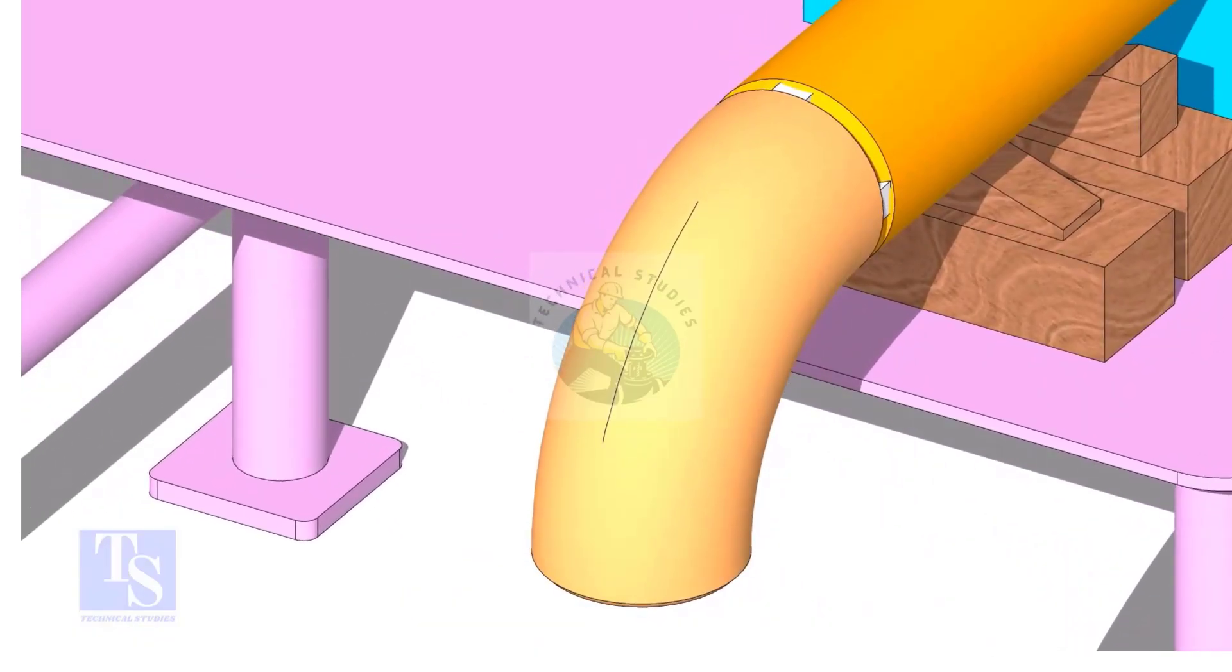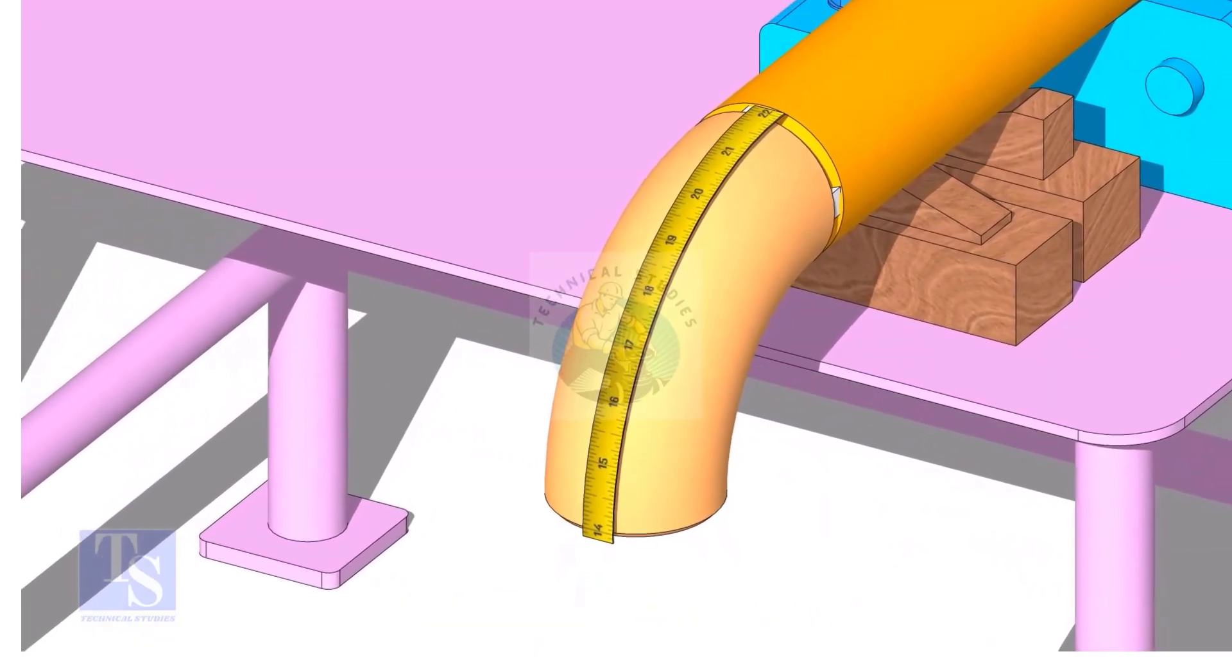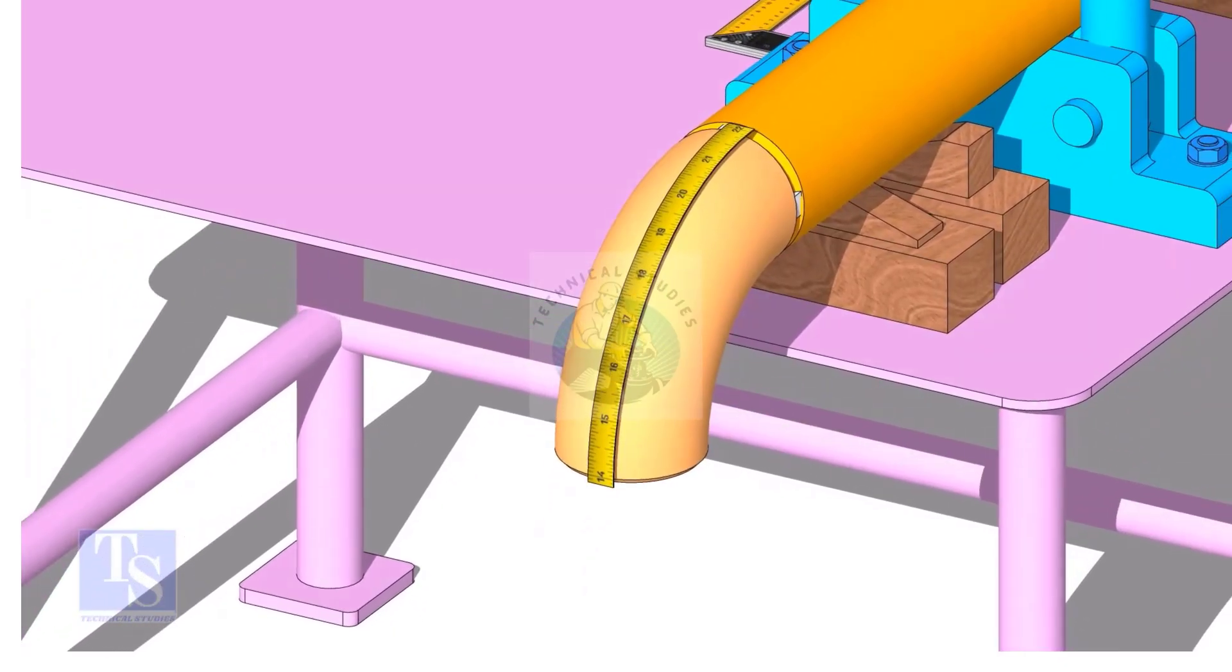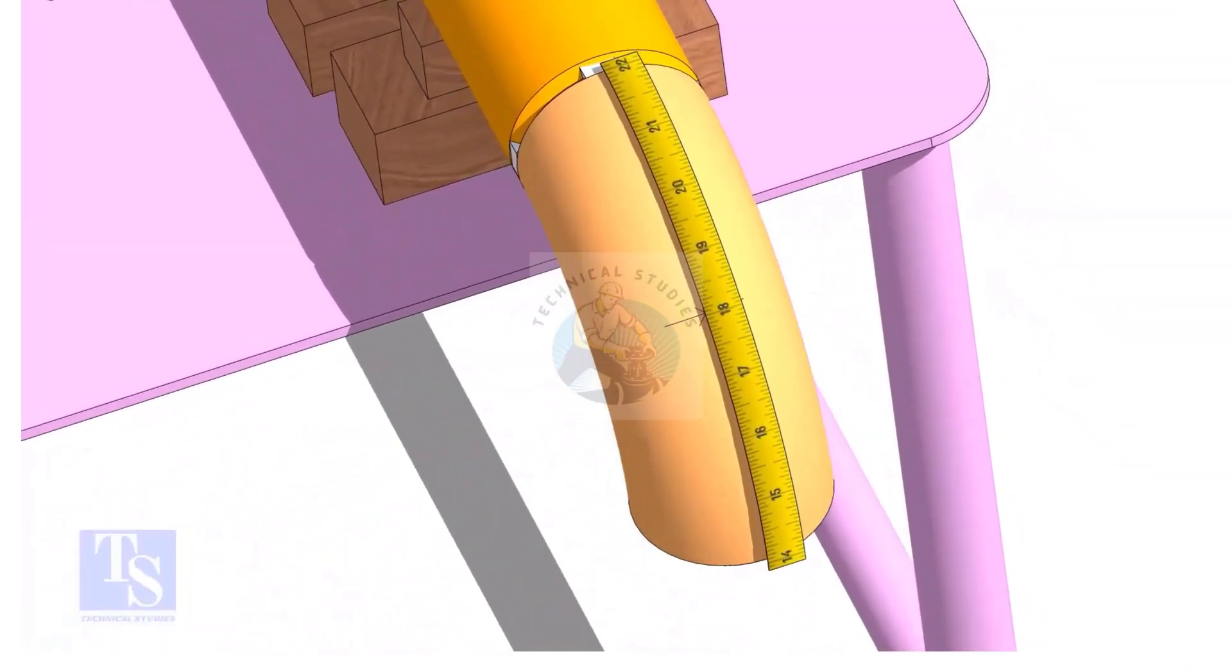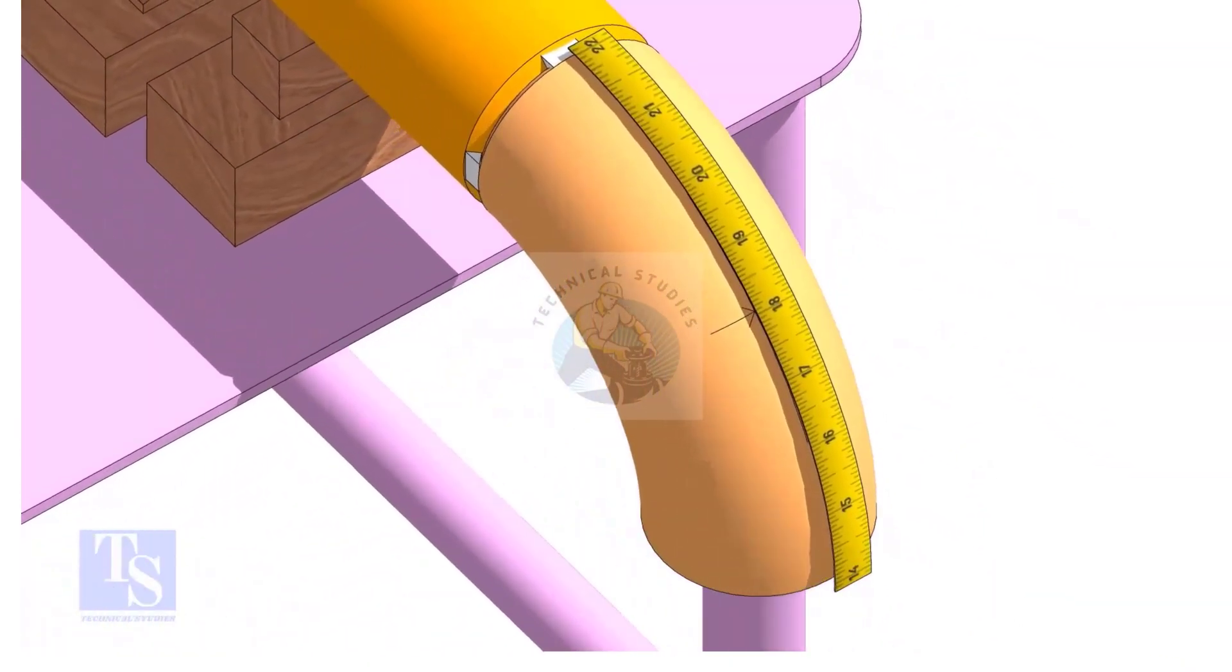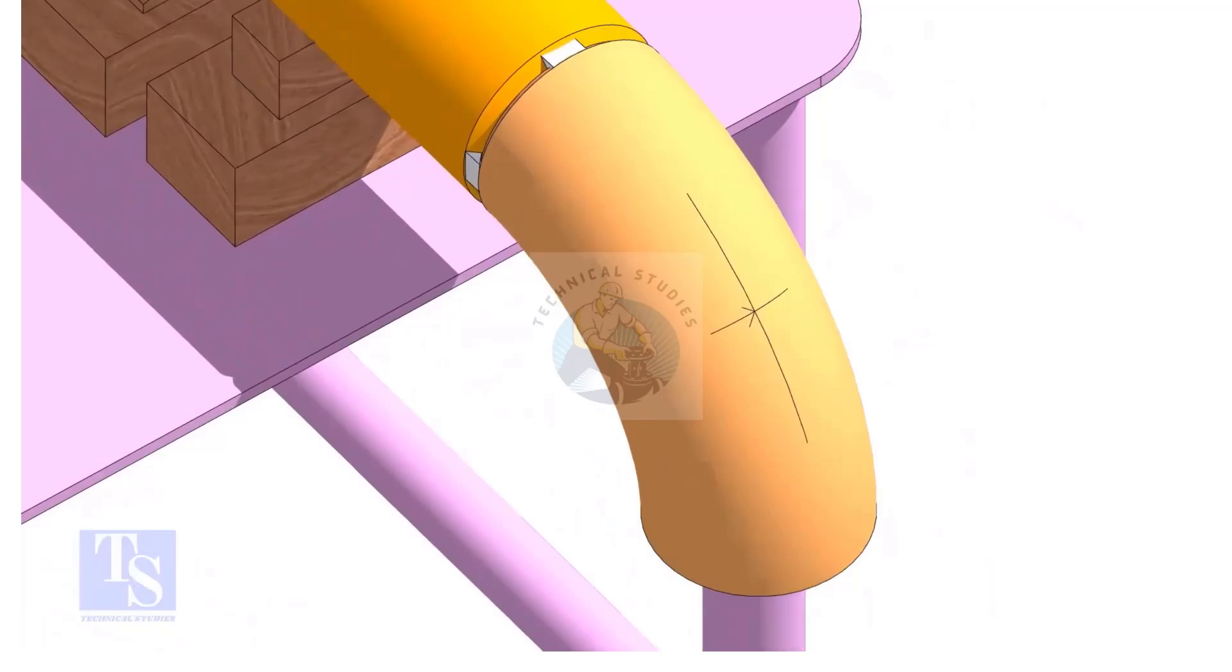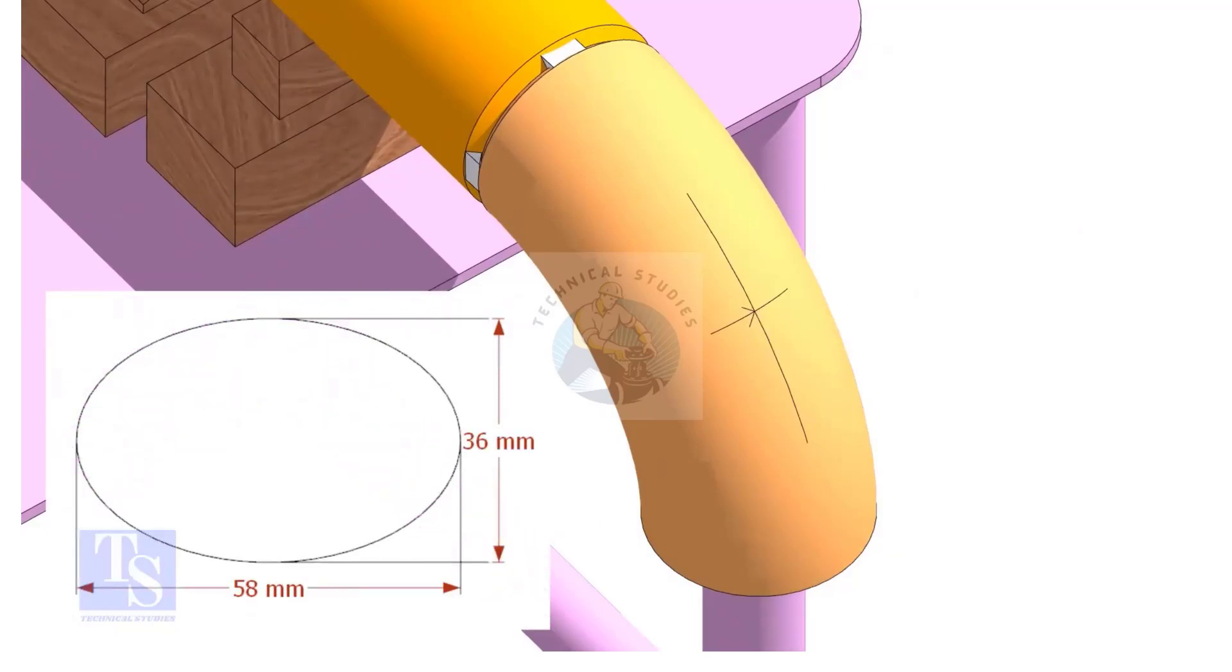Measure the outer circumference of the elbow and mark the half circumference on the centerline, as shown. Draw the elliptical circle on the elbow and cut the opening.